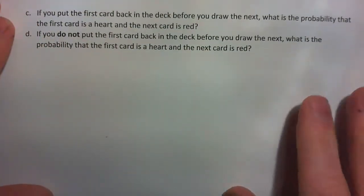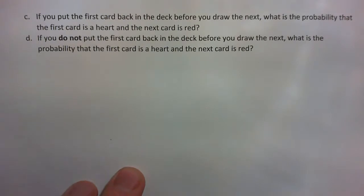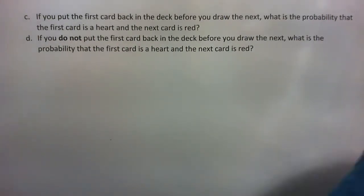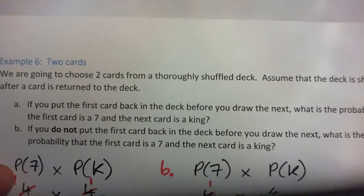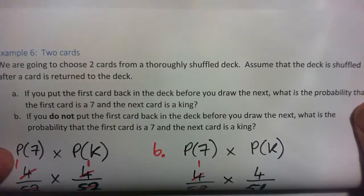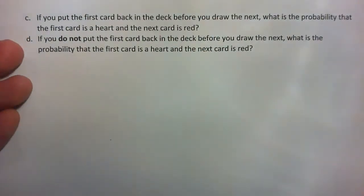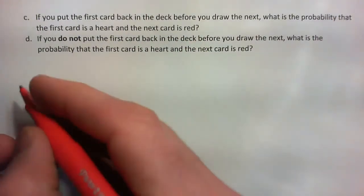Now Parts C and D. Please feel free to press pause and do this yourself, then check the video — I imagine you might make a mistake the first time if you're not careful. Part C: if you put the first card back in the deck before you draw the next, what is the probability the first card is a heart and the next card is red? So we want the probability the first card is a heart, then the probability the next card is red.